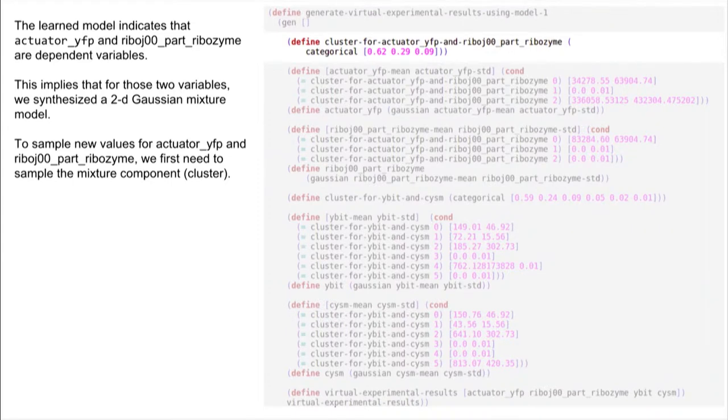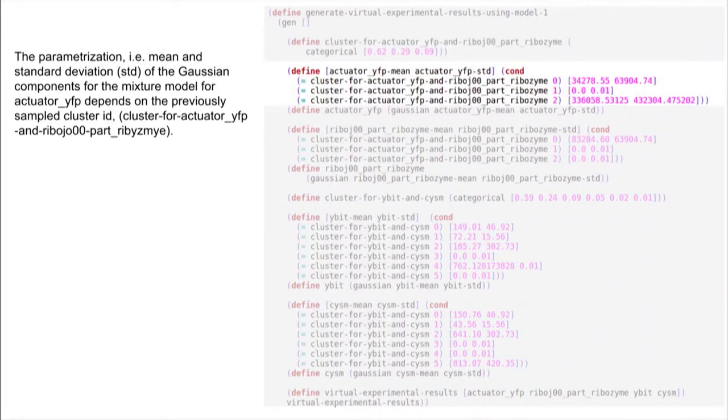And what the model learned is actually a hierarchical DP mixture model. So what we're synthesizing here are a number of Gaussian mixture models. And to do that, what we first do is we sample a cluster assignment for two variables that the synthesizer identified as dependent. So what this line does is it gets a cluster ID for a new data point for YFP and RIBO to be drawn from a mixture with three components, like we sample from a three-value categorical.